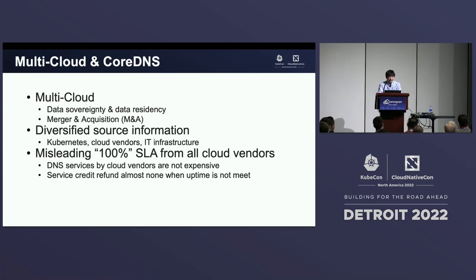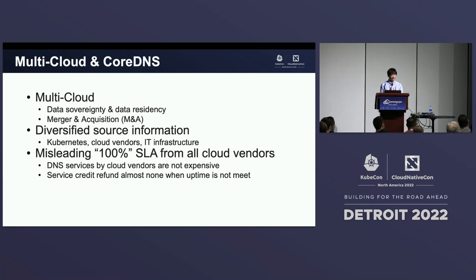CoreDNS fits the gap in multi-cloud deployment because CoreDNS can consolidate and diversify information. You can consider CoreDNS as a single source of truth, with different DNS information scattered around in AWS, Google Cloud, Azure, your IT infrastructure, and your local Kubernetes clusters. That's why CoreDNS can easily fill in the gap and allow you to work in a heterogeneous environment.